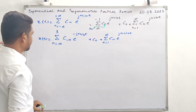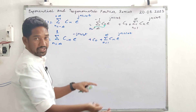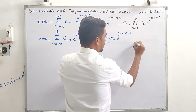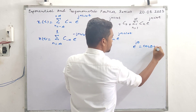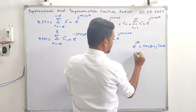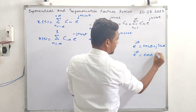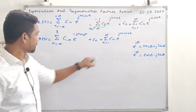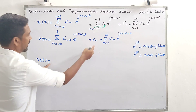Now I will use Euler's identity. What is it? e raised to j theta equals cos theta plus j sine theta, and e raised to minus j theta equals cos theta minus j sine theta. We plug in this expression into our x(t) and continue.